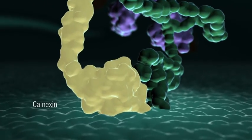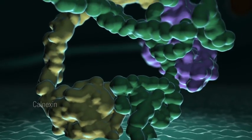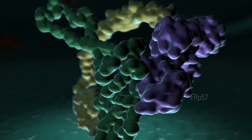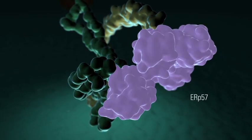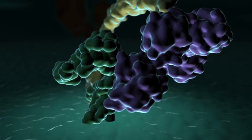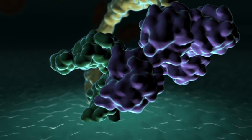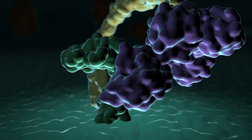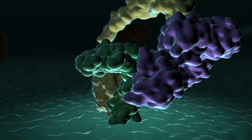The assembly of class 1 molecules begins with the folding of the heavy chain, assisted by the molecular chaperone calnexin and an associated enzyme termed ERP57. Calnexin stabilizes the heavy chain and prevents aggregation, while ERP57 catalyzes the formation of disulfide bonds.